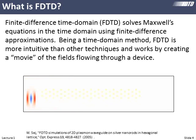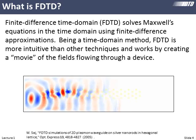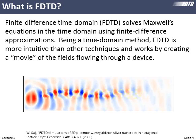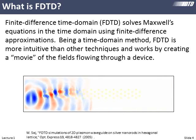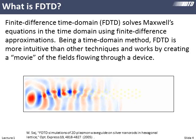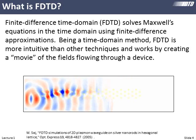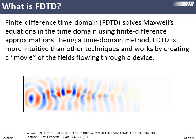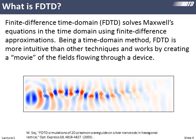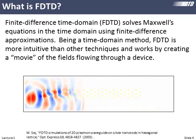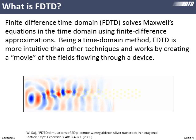So what is FDTD? It is solving Maxwell's equations in the time domain. That means we're literally making movies of the fields, and we can actually do that. We can go into MATLAB, write our finite difference time domain code, and save each frame as a movie — each little frame being one iteration in our code. Because it's time domain, this makes it really, really good for modeling transient phenomena, which a frequency domain solver is not nearly as good at.